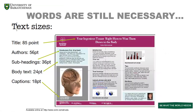Words are still necessary. Here's a bit of an overview on text sizes: your title should be no smaller than 85 point. Your authors, subheadings, subtitles — those give you some sizes. Captions: 18 point, though I like 24. Some things have to be bigger and some things can be smaller.